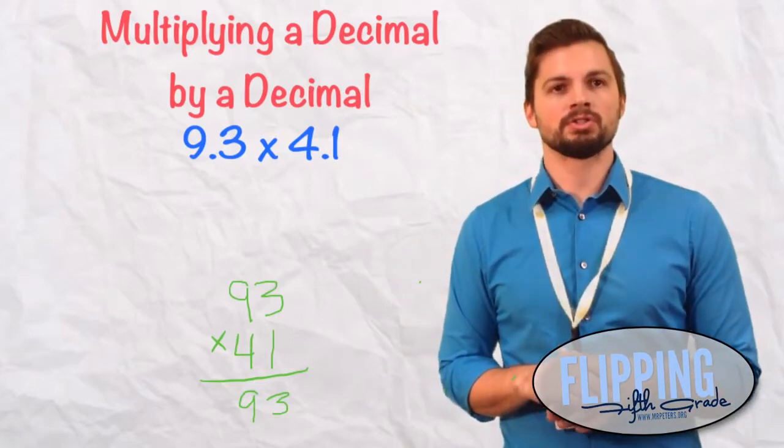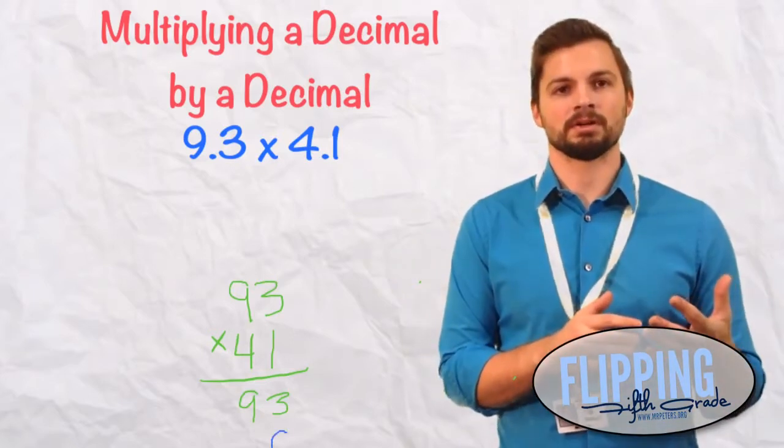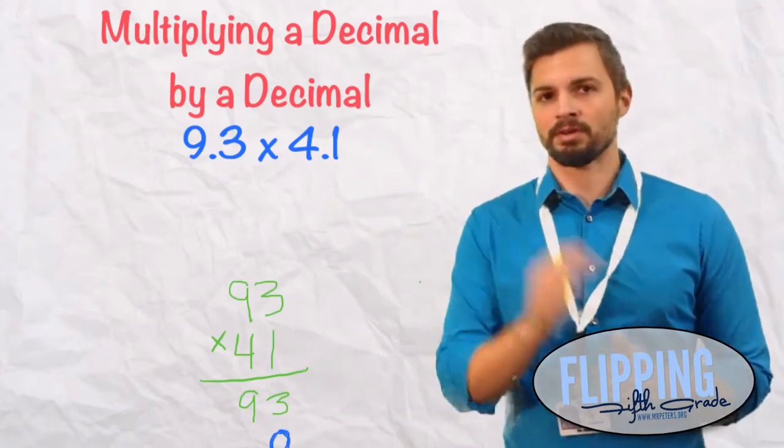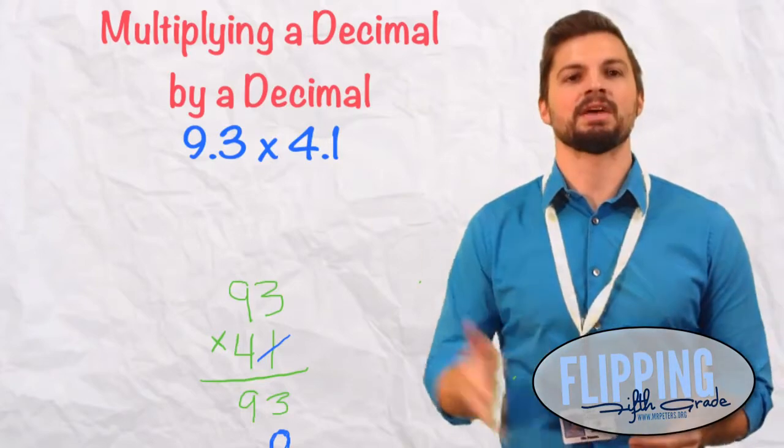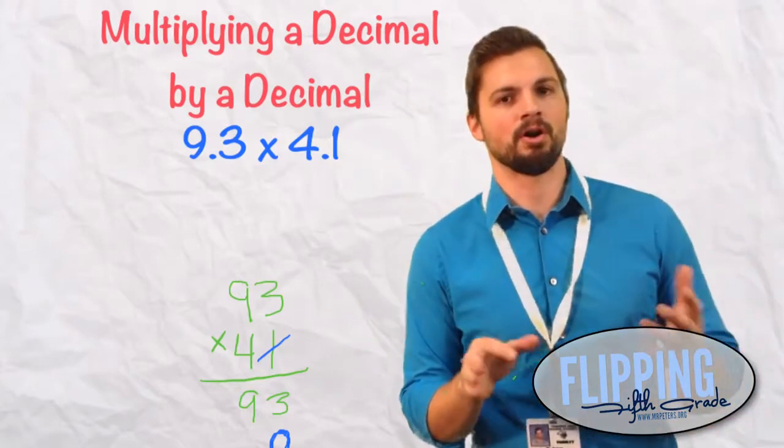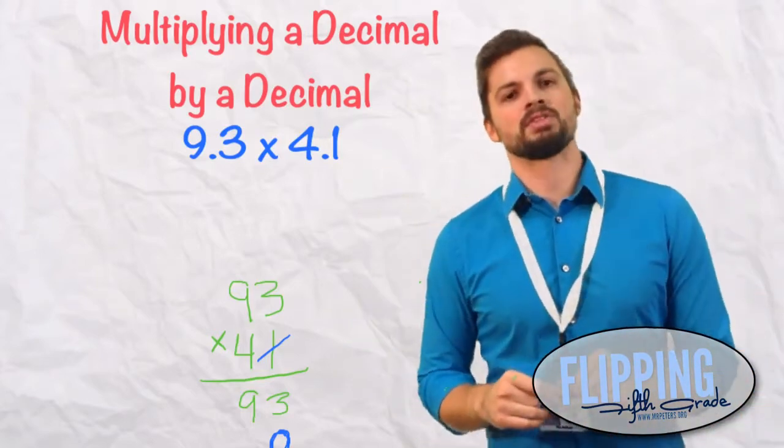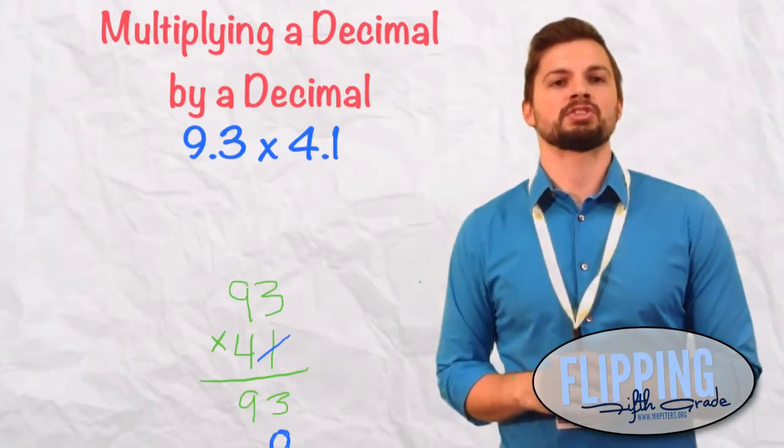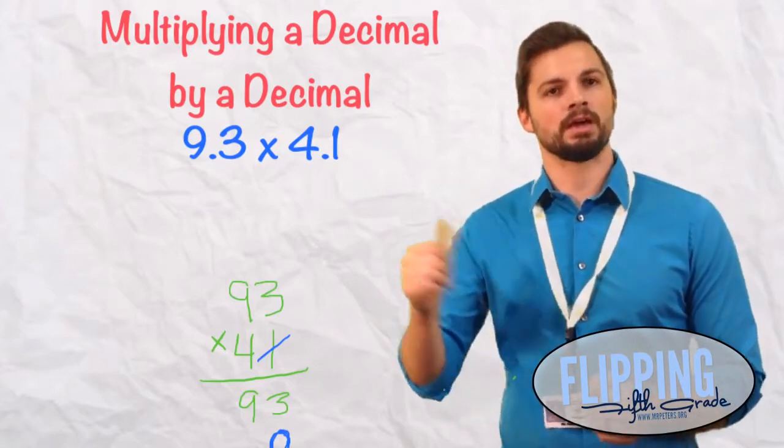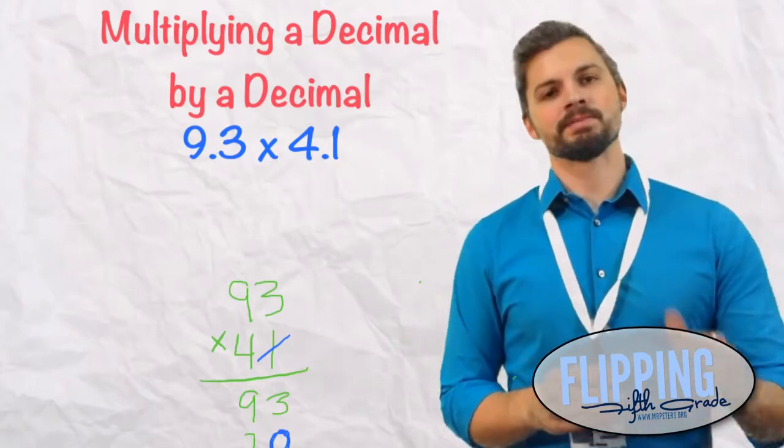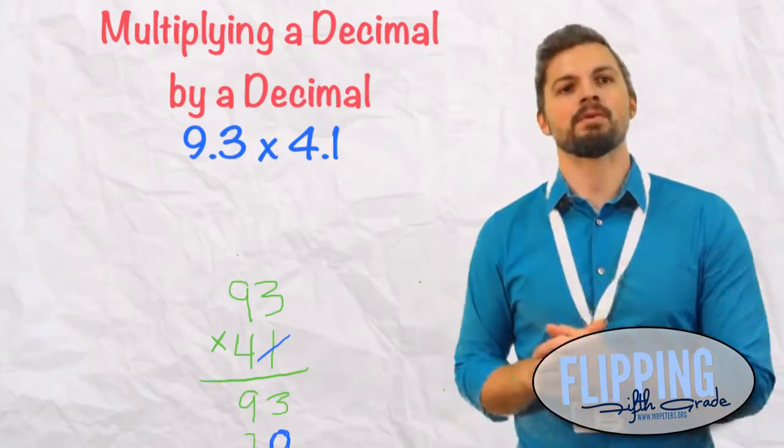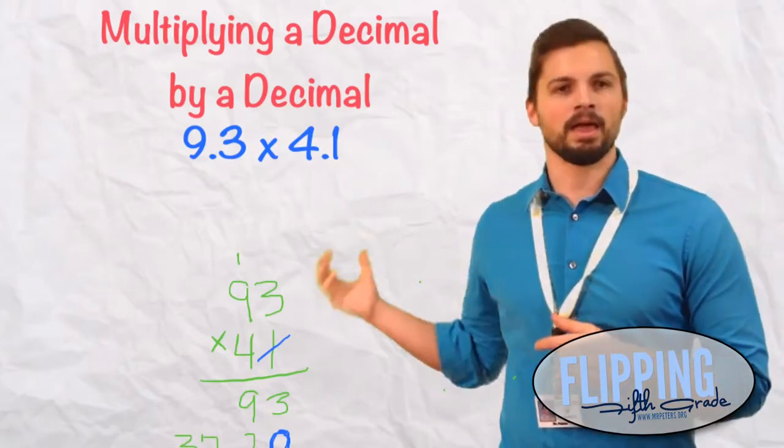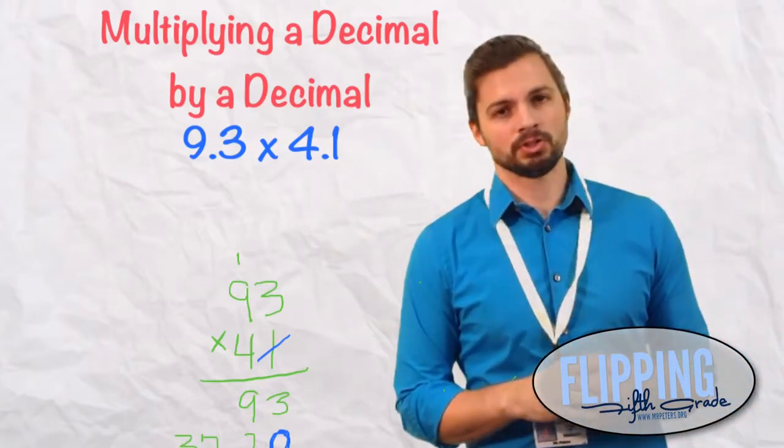And we're going on to our tens column here. The 4 times 3, sorry, I almost forgot the most important step. We drop that zero. Remember the O in MoMA. Drop that zero. So now, 4 times 3 is 12, so we put down the 2, and we carry the 1. Now we take 4 times 9 is 36, and we add that 1 to get 37. So our two partial products are 93 and 3,720.